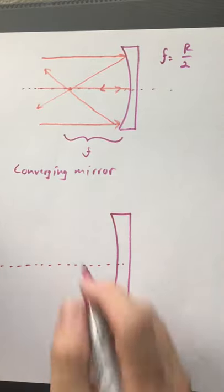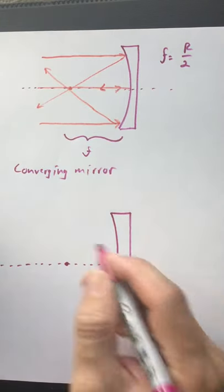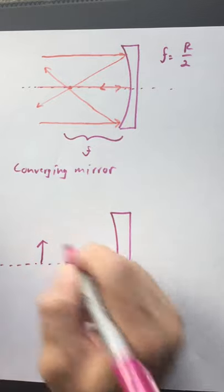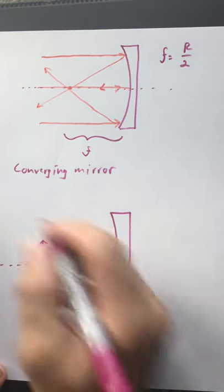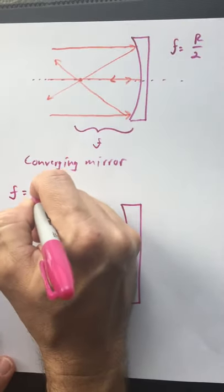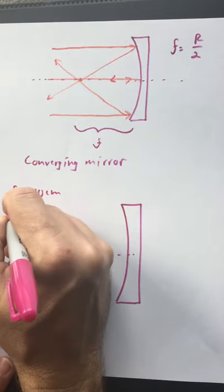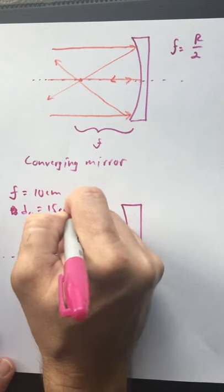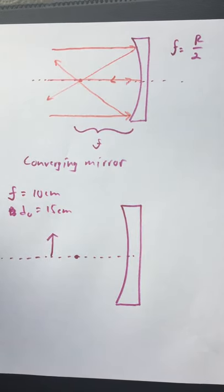I should also point out we have the same set of equations as we developed for lenses — we're going to use the thin lens equation, even though this is not a lens. If you want to call it the mirror equation you're welcome to, but it turns out to be the same equation. So there's my axis; the focal point is here. Let's put in an object farther away from the mirror than the focal point. Let's put in some numbers: focal length is 10 centimeters, distance to the object is 15 centimeters. First, ray tracing.